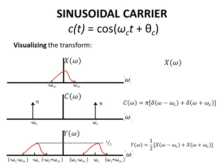The second plot shows c of omega, which is the Fourier transform of the carrier function c of t. c of omega is equal to pi times quantity delta of omega minus omega c plus delta of omega plus omega c. Notice that this is two shifted delta functions with amplitude pi.